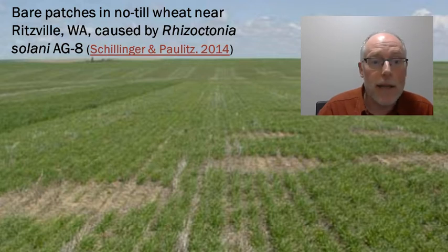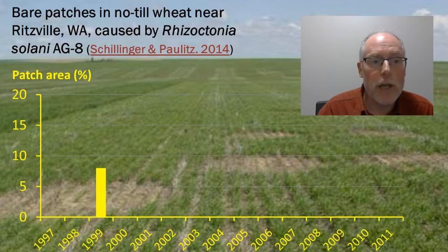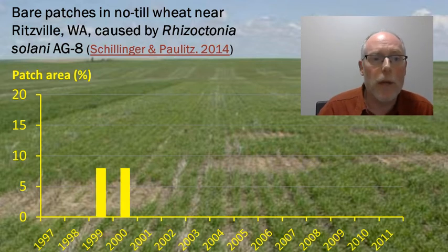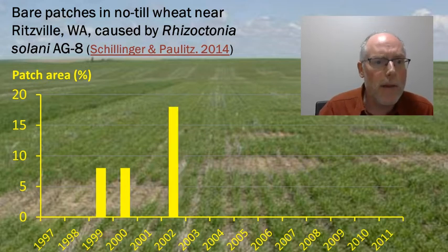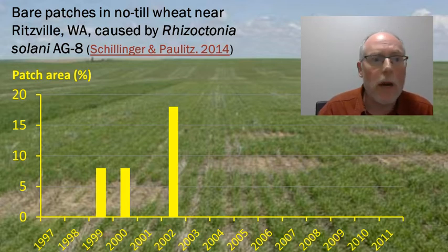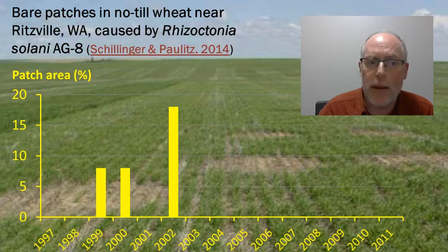In 1999 and 2000, the bare patches covered about 8% of the area planted to wheat. 2001 was a drought year, so bare patches couldn't be distinguished from dry spots. By 2002, the bare patches were covering 18% of the area planted to wheat. This was looking bad.